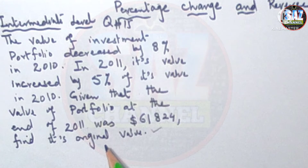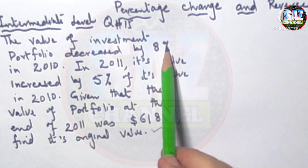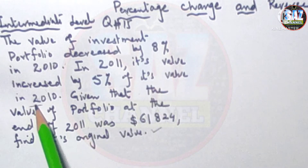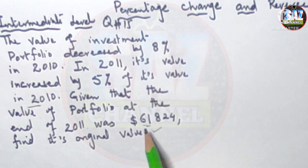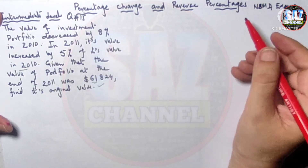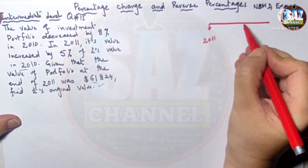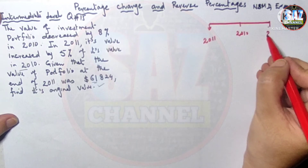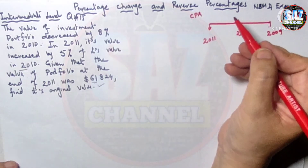Let us read and understand the question again. The value of the investment portfolio decreased by 8% in 2010. In 2011, its value increased by 5% of its value in 2010. The value at the end of 2011 is $61,824 and we need to find the original value. There are three years in discussion: 2011, 2010, and the original value one year back — 2009. The CPA approach helps us understand such difficult questions.